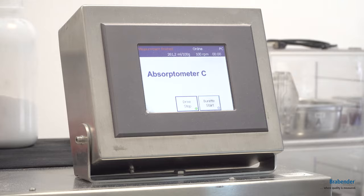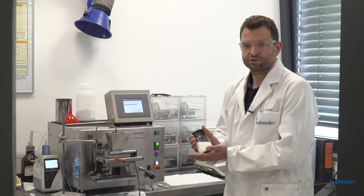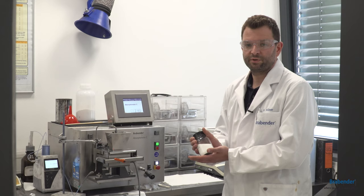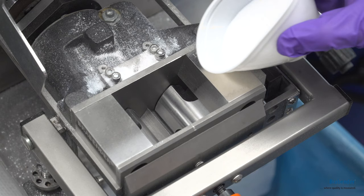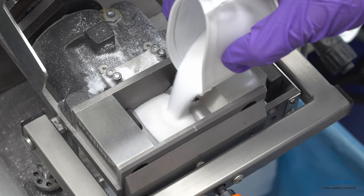With the Absorptometer C we determine the oil absorption number. Today we test a type of silica material. It's also possible to test other materials.